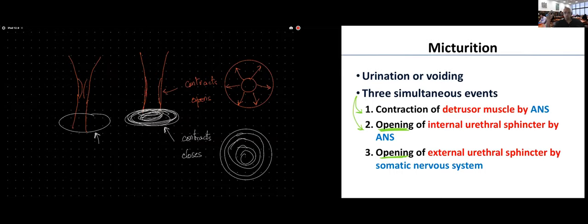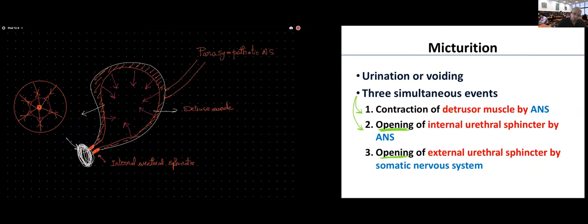To summarize the three steps of micturition: first, contraction of the detrusor muscle; second, contraction of the internal urethral sphincter (which opens it); and third, the voluntary part — relaxation of the external urethral sphincter.